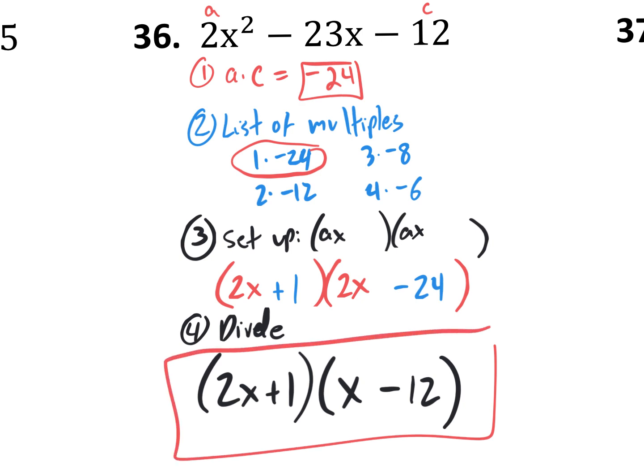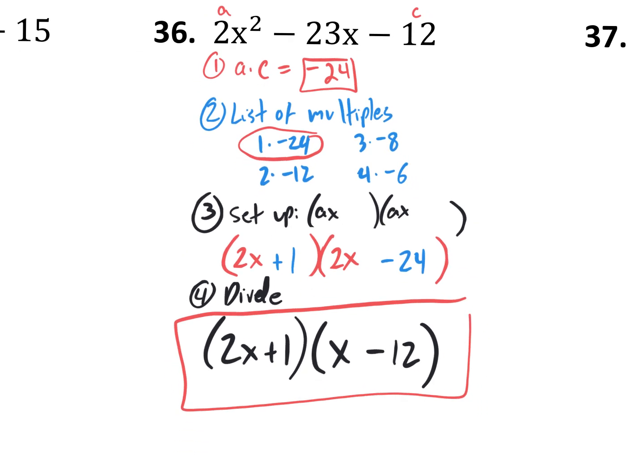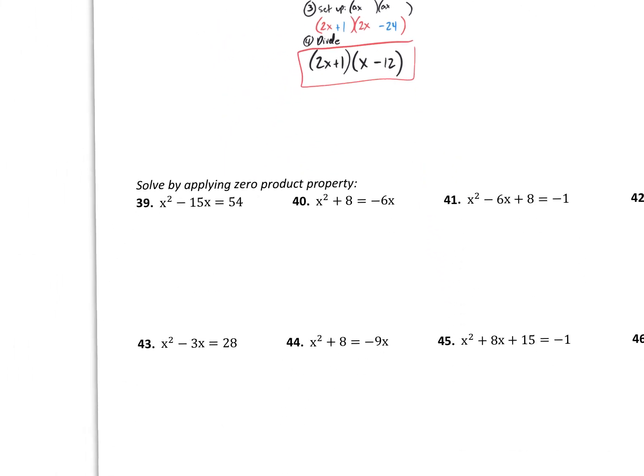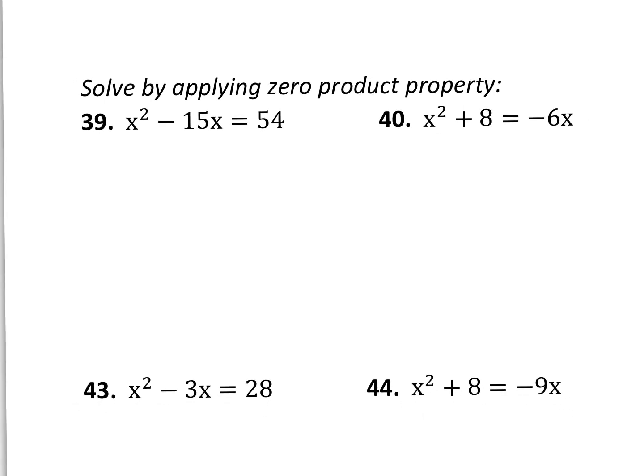So we have, I think, six more questions for you guys to practice, and that should get you a lot better at factoring quadratic trinomials when your A value is not 1. Again, the solutions are posted on Google Classroom, and they are very detailed. Like, I actually write down step 1, A times C. Step 2, list the multiples. I write my list. Step 3, set up this. AX, AX. So I write all this on the solutions. So please use it to check your answers.